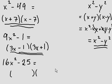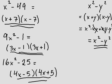We can factor 16x squared minus 25. The root of 16x squared is 4x. So we put 4x here, 4x there. The root of 25 is 5, so we put a negative 5 here, a positive 5 there, and we're done.